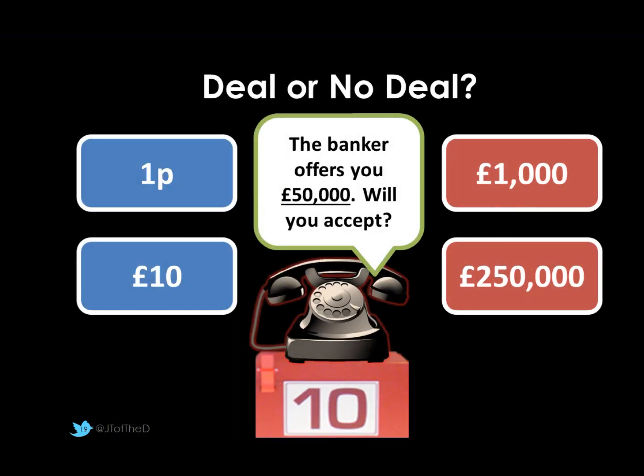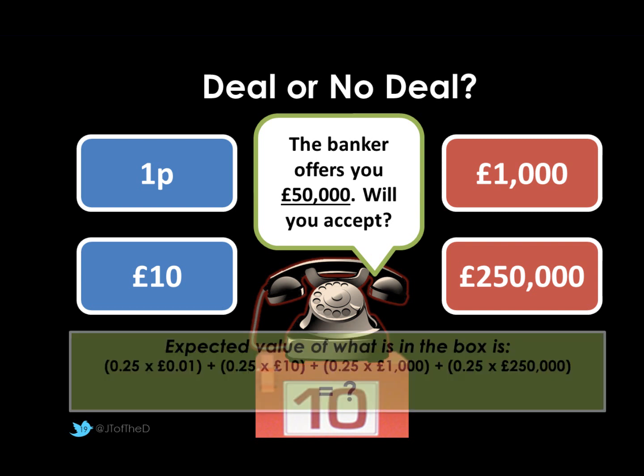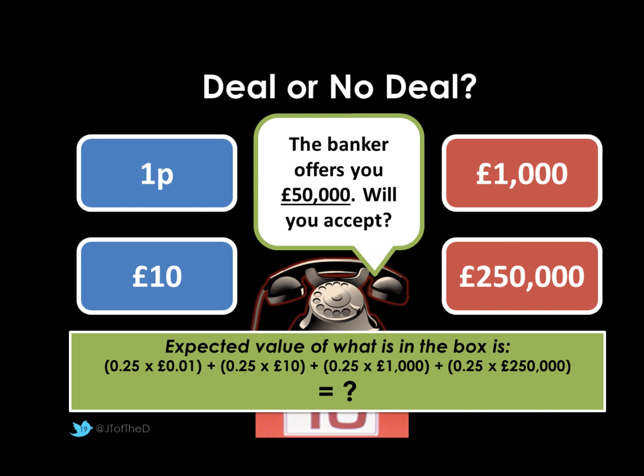Back to our Deal or No Deal options. We had four sums of money still outstanding: 1p, £10, £1,000, and £250,000. There's a 25% chance of getting any of those sums. So our calculation is: (0.25 × 1p) + (0.25 × £10) + (0.25 × £1,000) + (0.25 × £250,000). The probability adds up to 1, and the expected value of playing on is £62,752. So if the bank offered us £50,000, the sensible answer based on the decision tree would be: no deal.